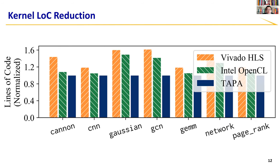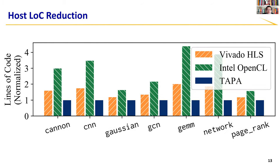This slide shows the kernel lines of code comparison. We can see that TAPA reduces lines of code—on average, TAPA reduces kernel lines of code by 22 percent. This slide also shows the host lines of code comparison, where the average reduction of host code is 51 percent.